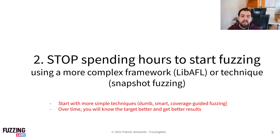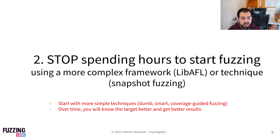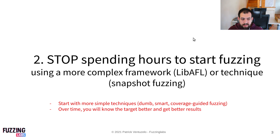If you do things progressively — starting with dumb or smart fuzzing, then coverage-guided fuzzing if you have the source code — by the time you explore the target you will discover new APIs, look at unit tests, and see how the library is supposed to work. It will be much easier to go deeper and improve your harness and coverage. Go step by step, and at the end it will be far less discouraging than jumping straight to the hardest approach. It's better to learn from the journey than to focus only on the final goal.